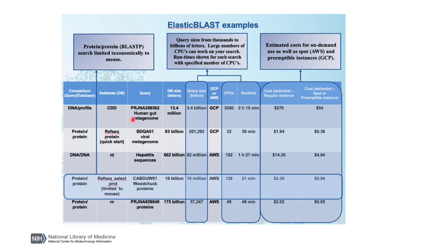Now I'd like to go through a few of the rows; the others you can look at on your own. The first row is the search of 3.4 billion bases against protein domains. It used 100 instances each with 32 CPUs and took a little more than two hours — it would have taken four days on a single machine. It's a big search and cost a few hundred dollars, but preemptible instances would have made it more affordable.